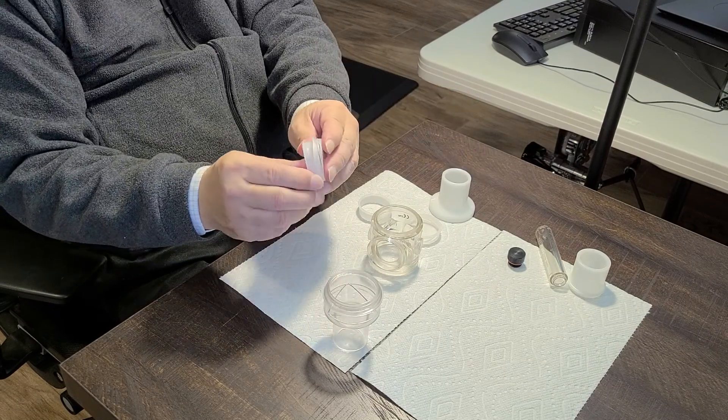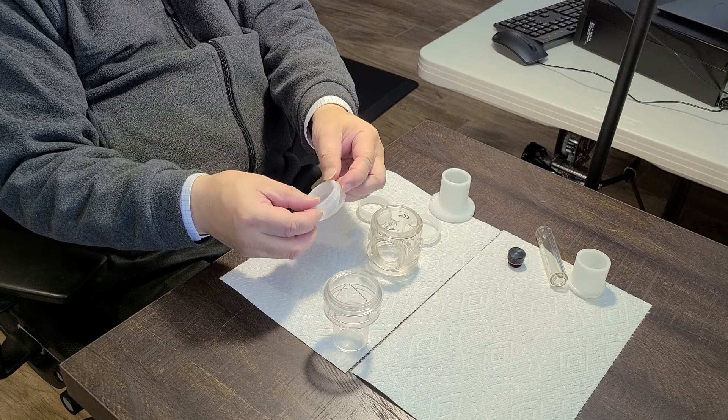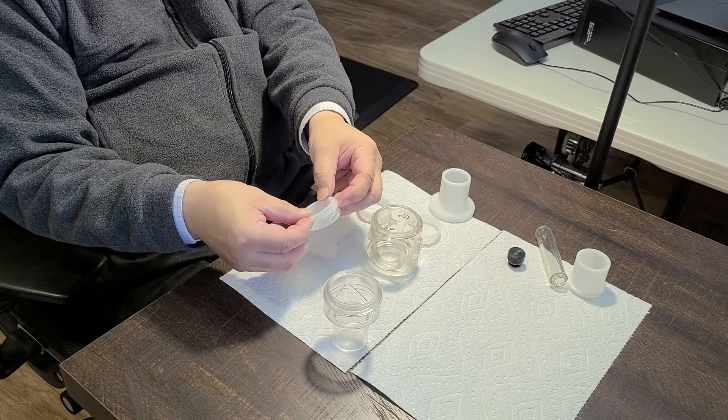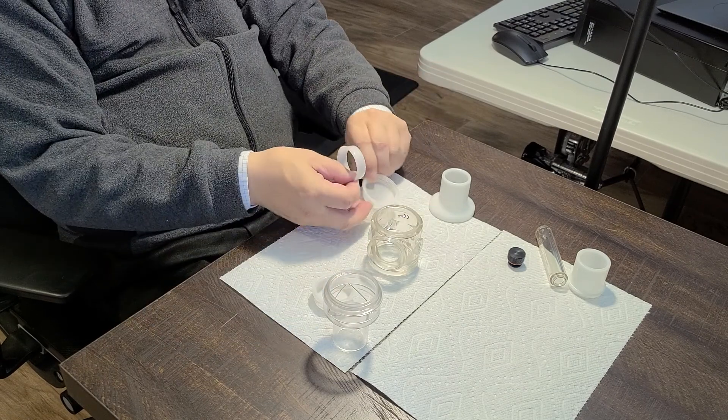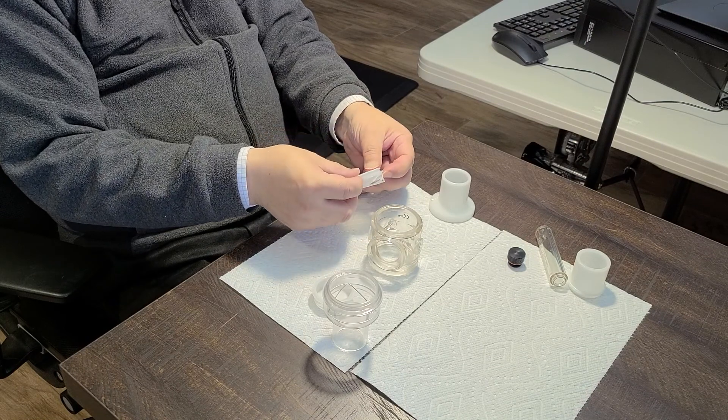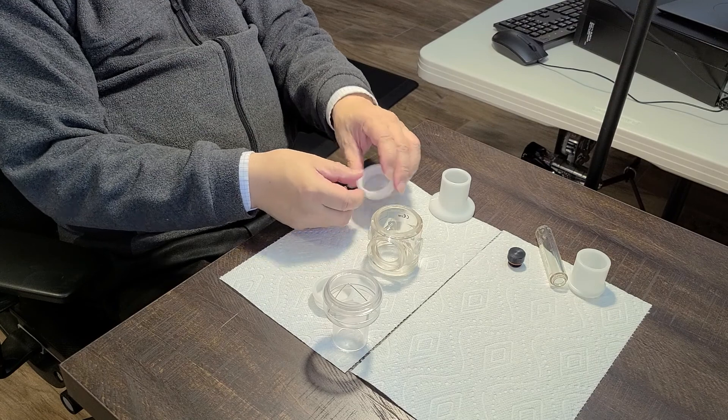First, reassemble the valve. Fit the spiral diaphragm loosely to the diaphragm ring using the eight-finger technique.